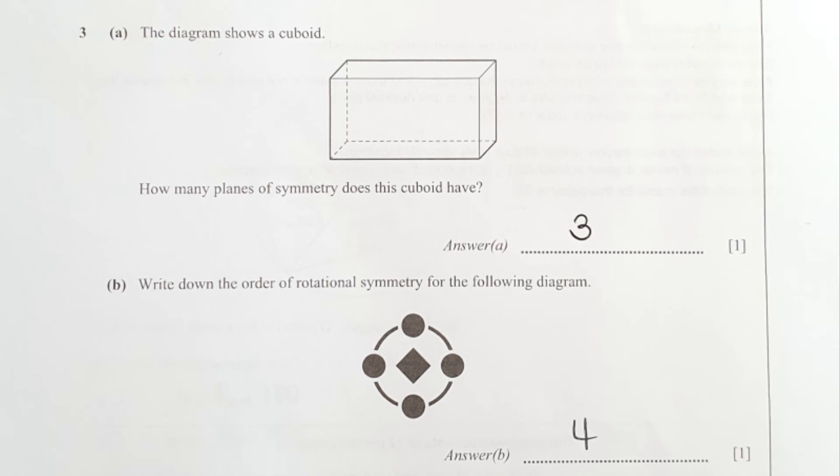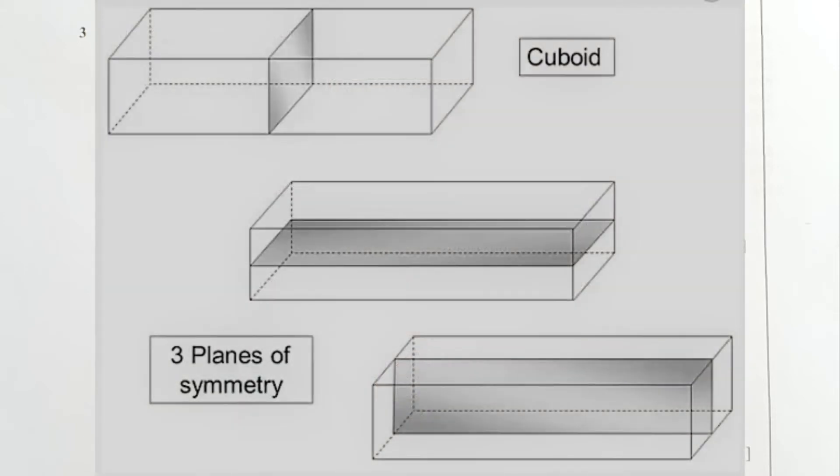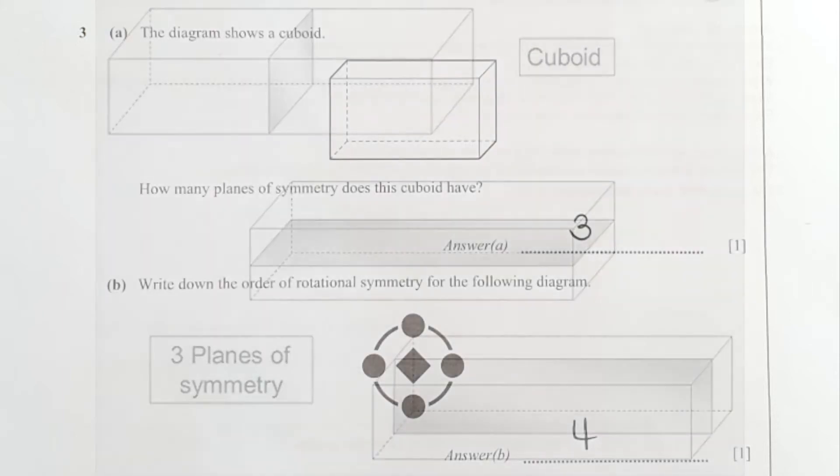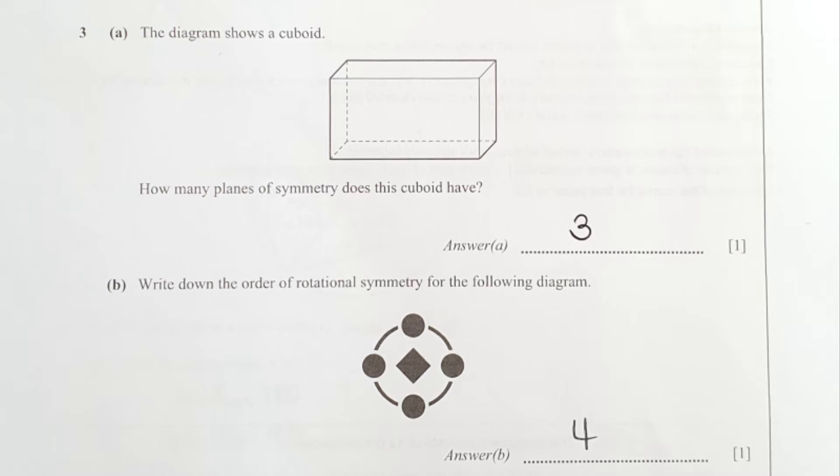For question 3, how many planes of symmetry does this cuboid have is actually 3. Attached is a sample of it to support the answer. For the next part, write down the rotational symmetry of the following diagram. The result will be 4 because for every single 90 degrees I turn, they will place themselves back into the original shape. Hence your rotational symmetry result will be 4.